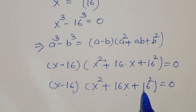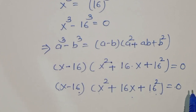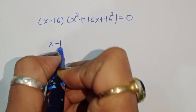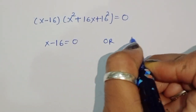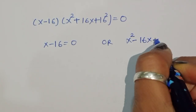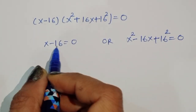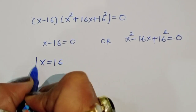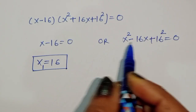From this we get two equations: first, x minus 16 equals 0, and second, x squared plus 16x plus 16 squared equals 0. From the first equation, x minus 16 equals 0, so x is equal to 16. This is the first value of x.